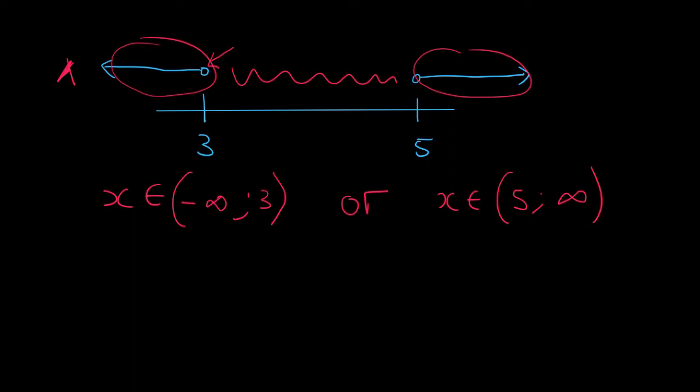In set builder notation you will say funny bracket x. So we're busy with x. You can then say remember you don't have to add infinity in this one. So for this part here we're trying to say that x must be anything smaller than 3. So we say x must be smaller than 3.